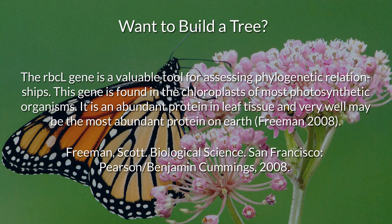Finally, for demonstration purposes, I assembled a small-scale phylogeny of native milkweed based on the RBCL gene. The RBCL gene is a valuable tool for assessing phylogenetic relationships. This gene is found in the chloroplasts of most photosynthetic organisms. It is an abundant protein in leaf tissue and very well may be the most abundant protein on Earth. Given the recent concerns over the introduction of competing non-native tropical milkweed, which harbors a deadly parasite that has affected monarch butterfly populations, I thought this inquiry might be worth examining.